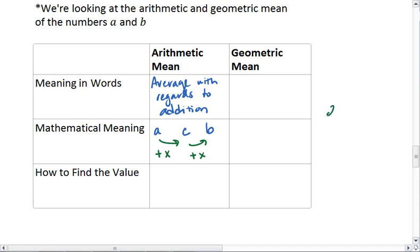For example, we already know the average, or the arithmetic mean of 2 and 6 is 4. That's because if we add 2 to 2, we get 4, and if we add 2 to 4, we get 6. So 4 is 2 units away from both 2 and 6.